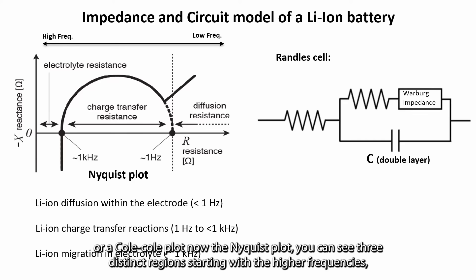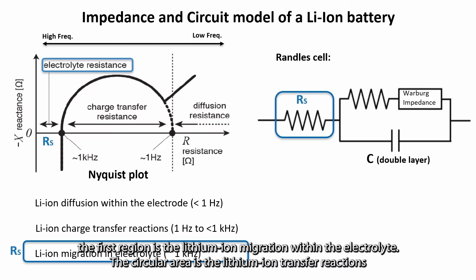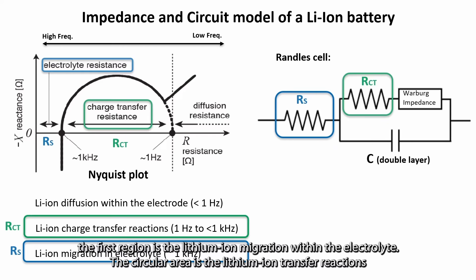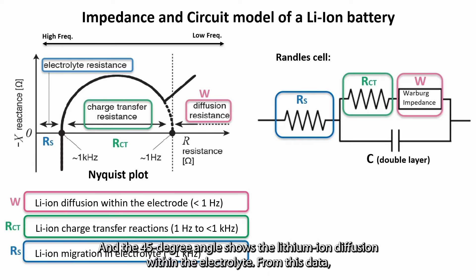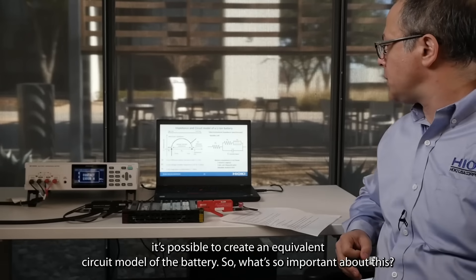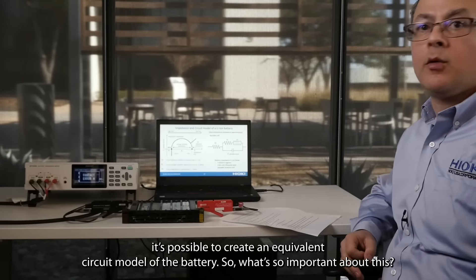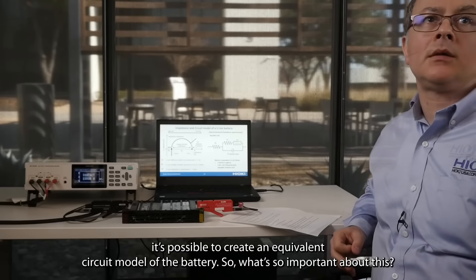The Nyquist plot shows three distinct regions starting with the higher frequencies. The first region is the lithium ion migration in the electrolyte, the circular area represents the lithium ion charge transfer reactions, and the 45-degree angle shows the lithium ion diffusion within the electrolyte. From this data it's possible to create an equivalent circuit model of the battery.